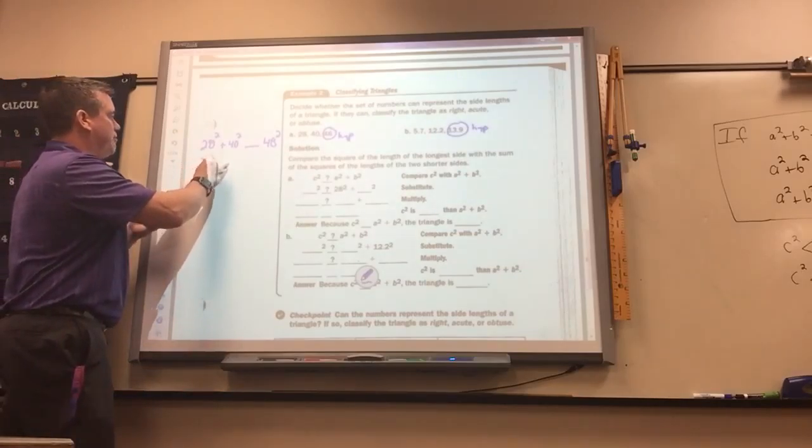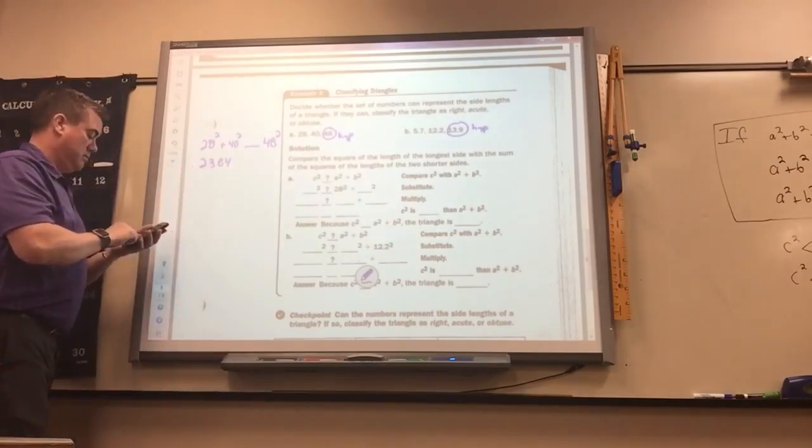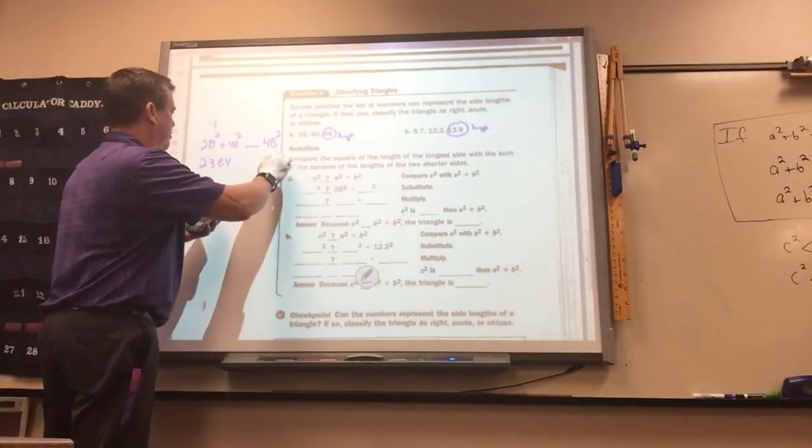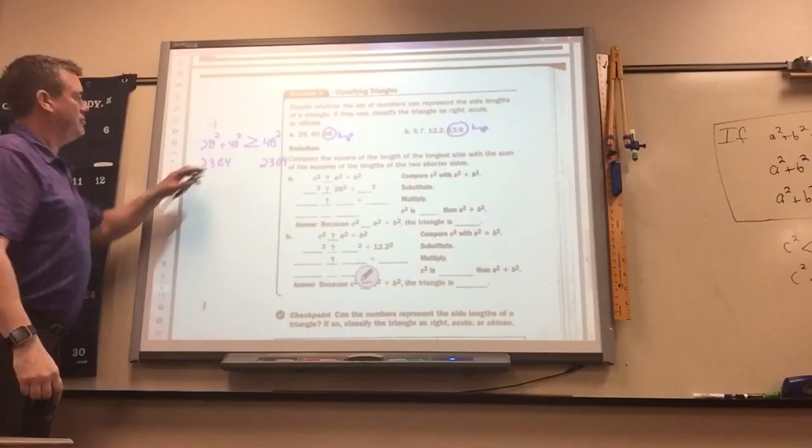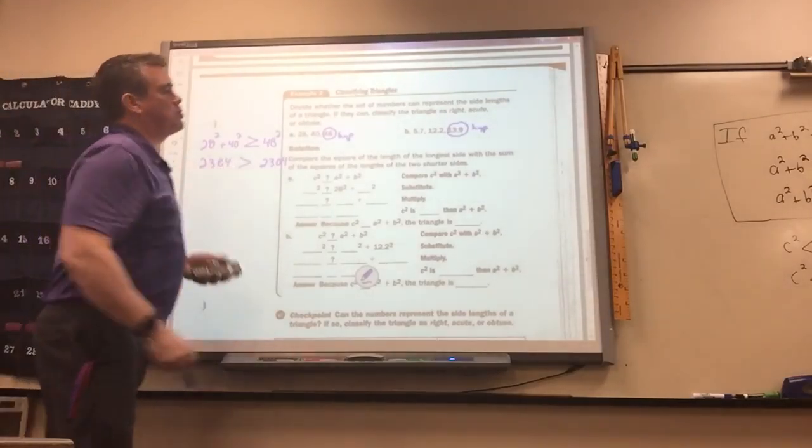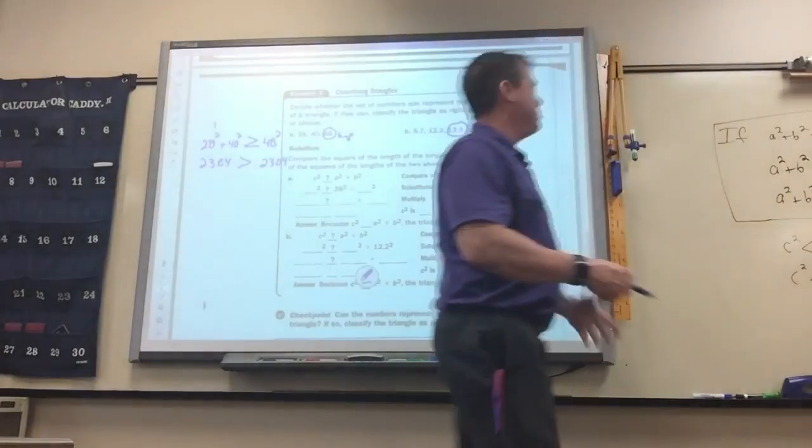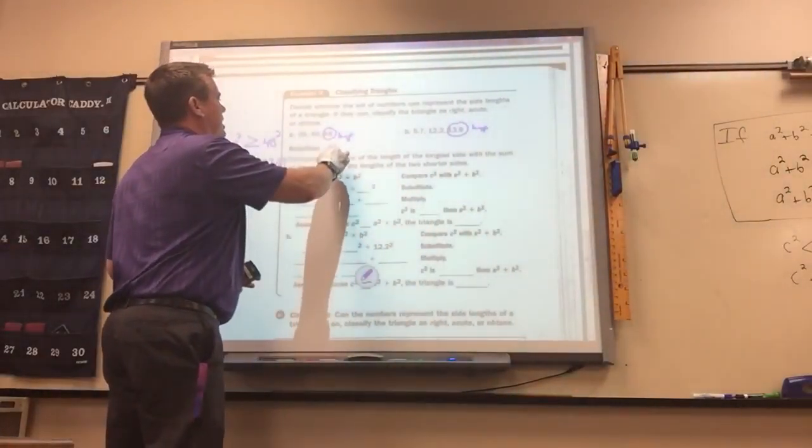So this is 2384. This is 2304. So this is greater than. So if a squared plus b squared is greater than c squared, it's acute. So this makes an acute triangle.